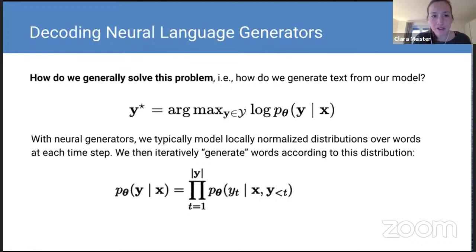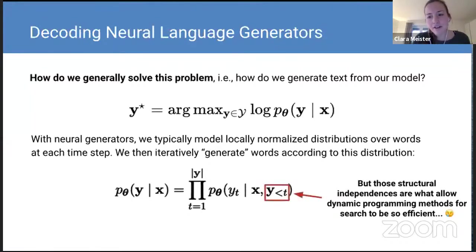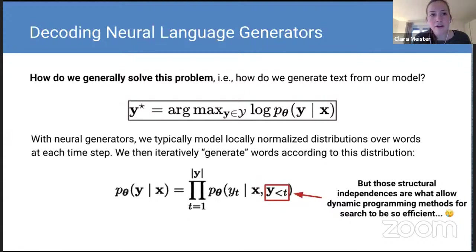In the case of neural generators, we typically have locally normalized distributions over words at each time step. We model the conditional probability of a word given the input and all previously generated words, then iteratively generate words according to this distribution. With the power of neural networks, we don't even have to make any independence assumptions — no n-gram assumptions. We can condition on the entire past without the model exploding in complexity.